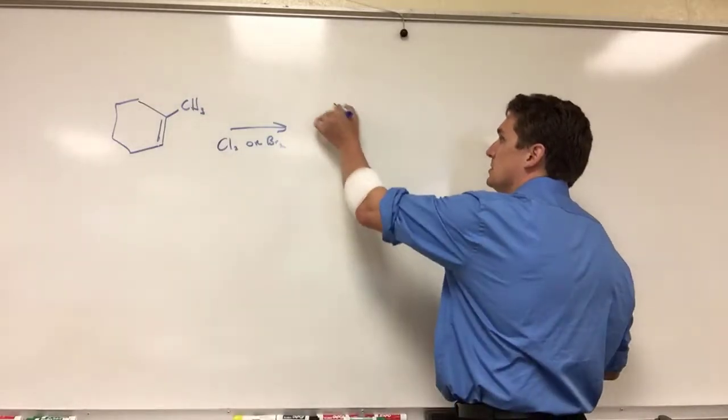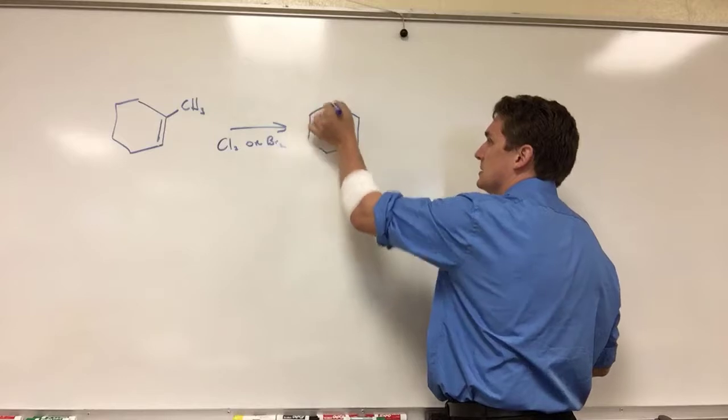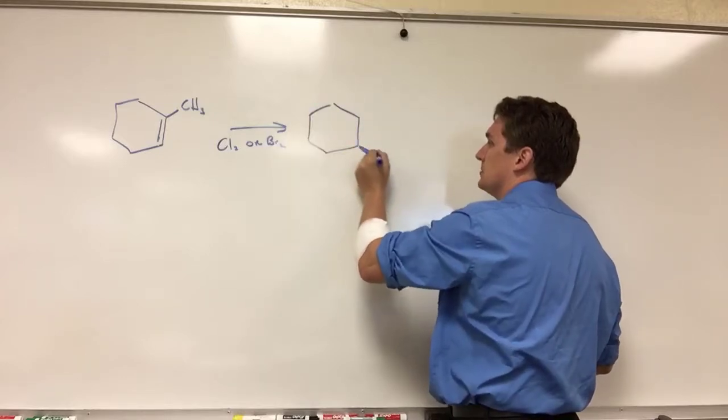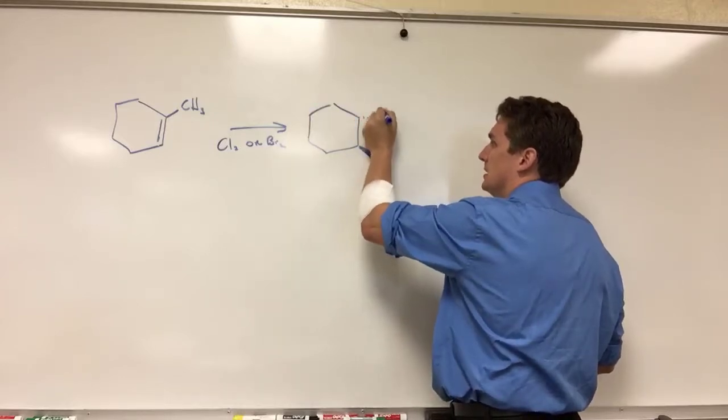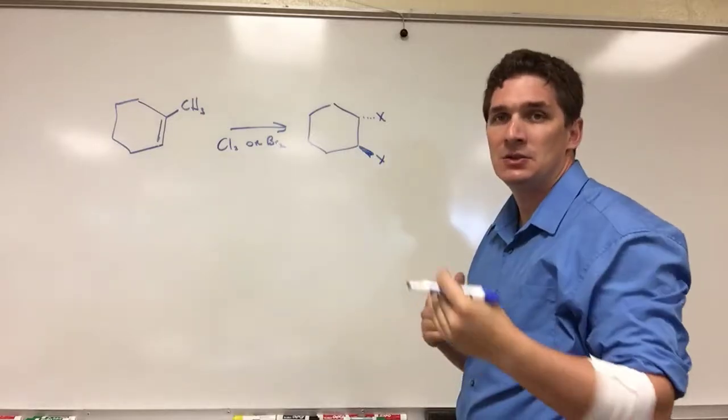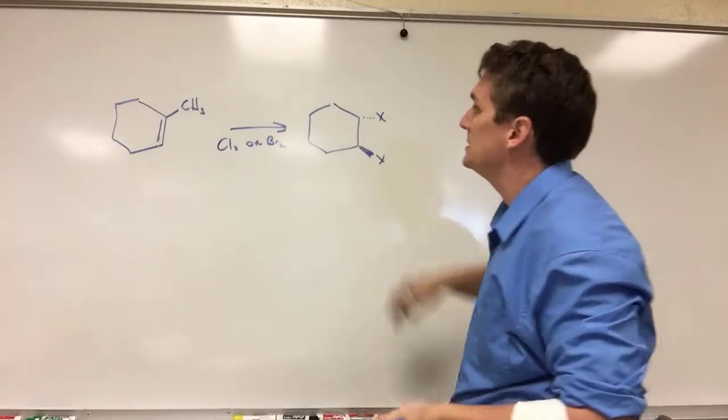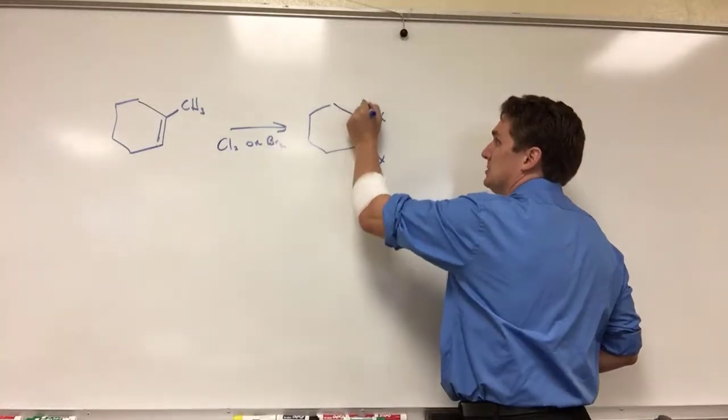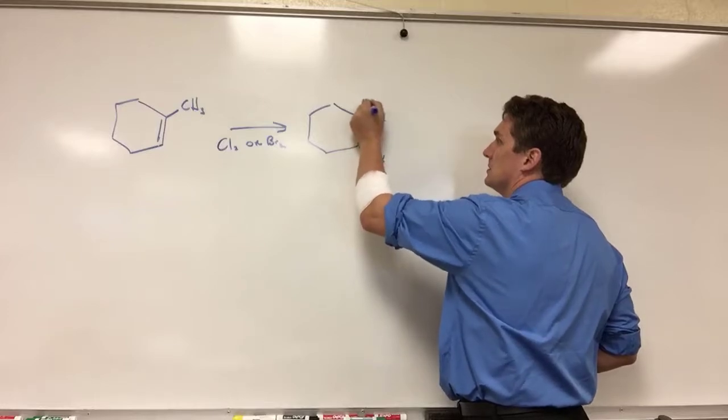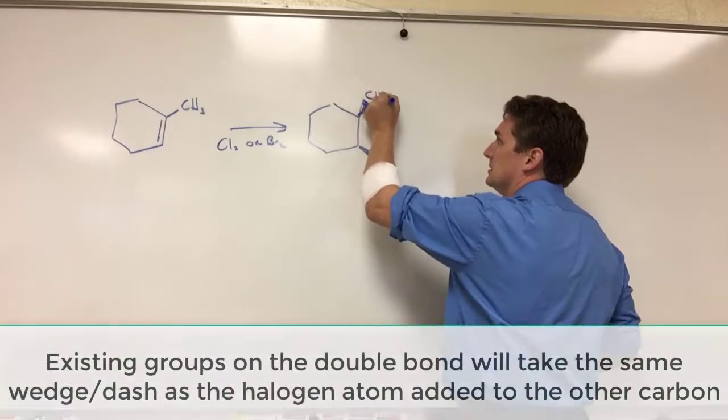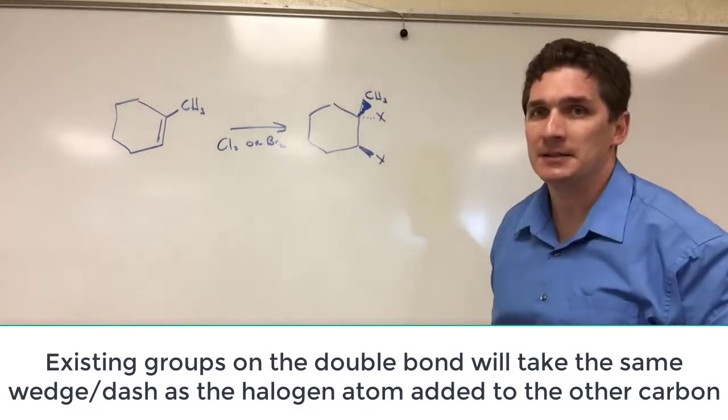So let's just do them with X's. In this case, we'll have one up, we'll have one down. Now, since they're doing an anti addition, whatever this has, if there is an existing substitution, it's going to end up being opposite the halogen that's being added.